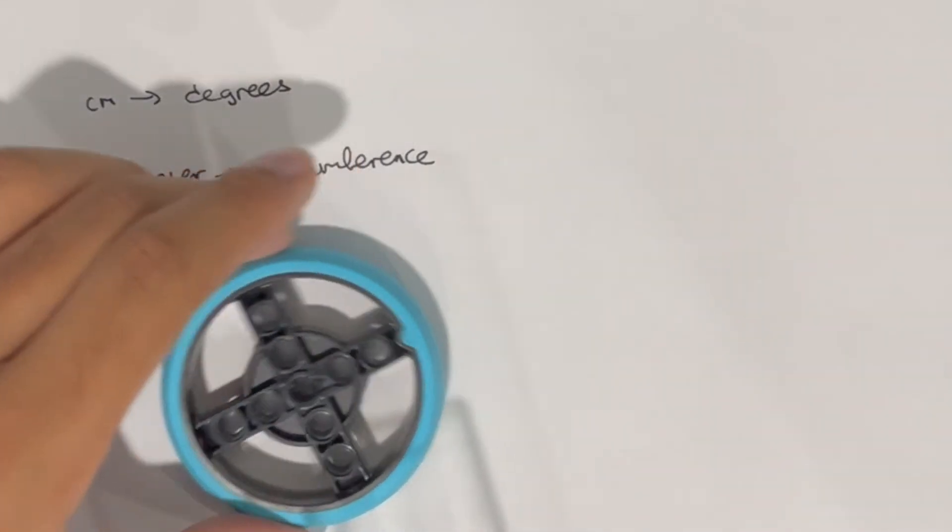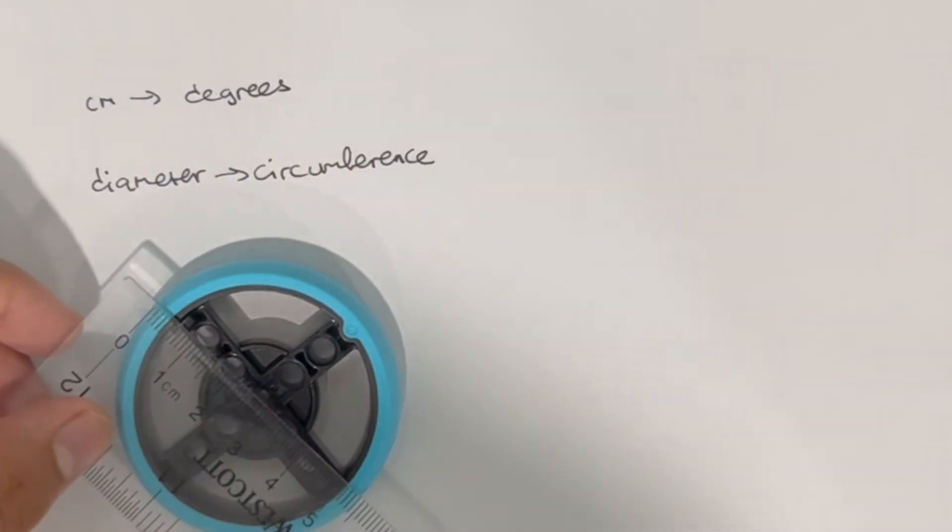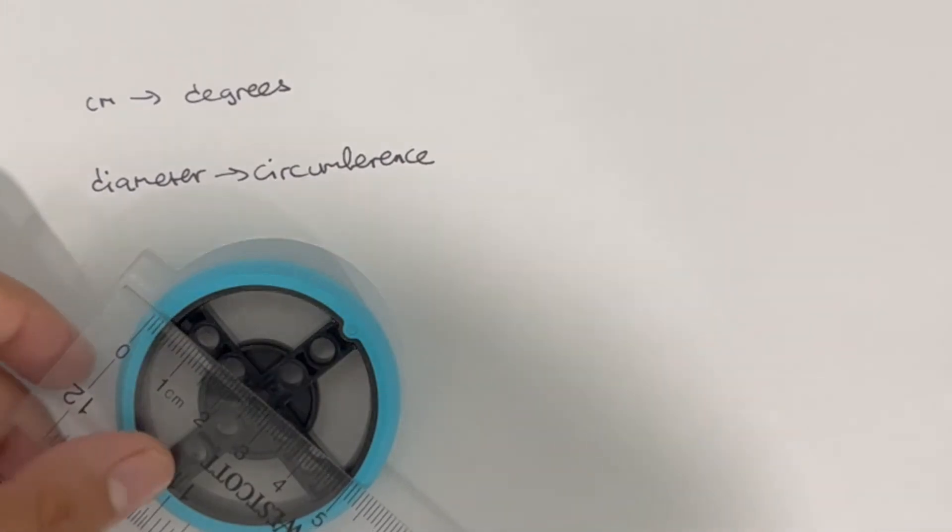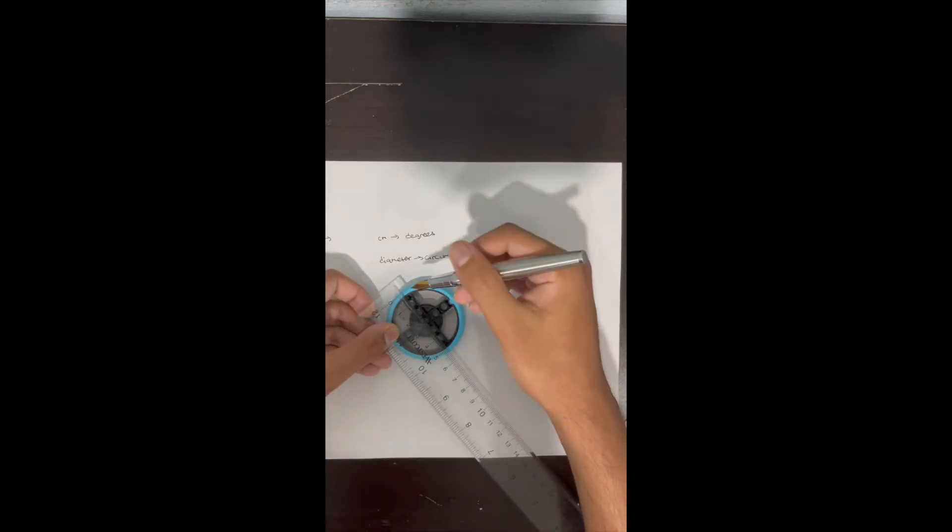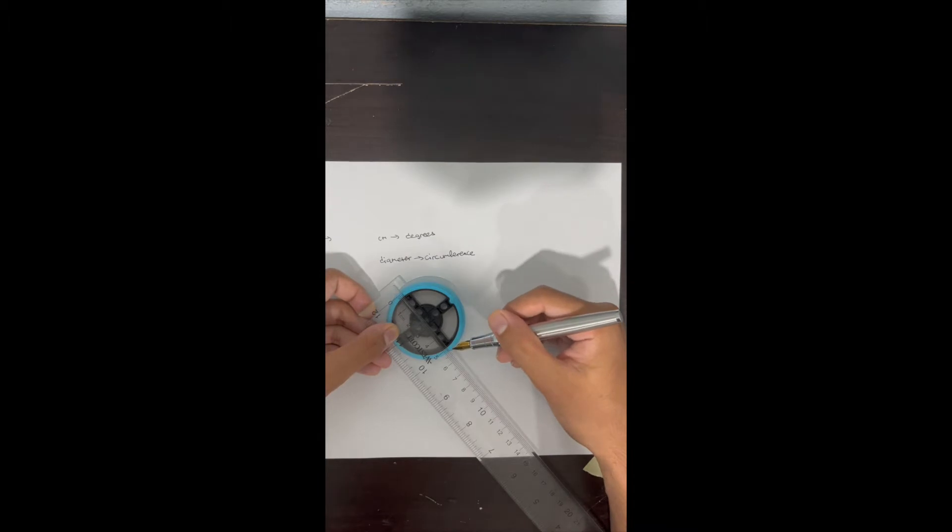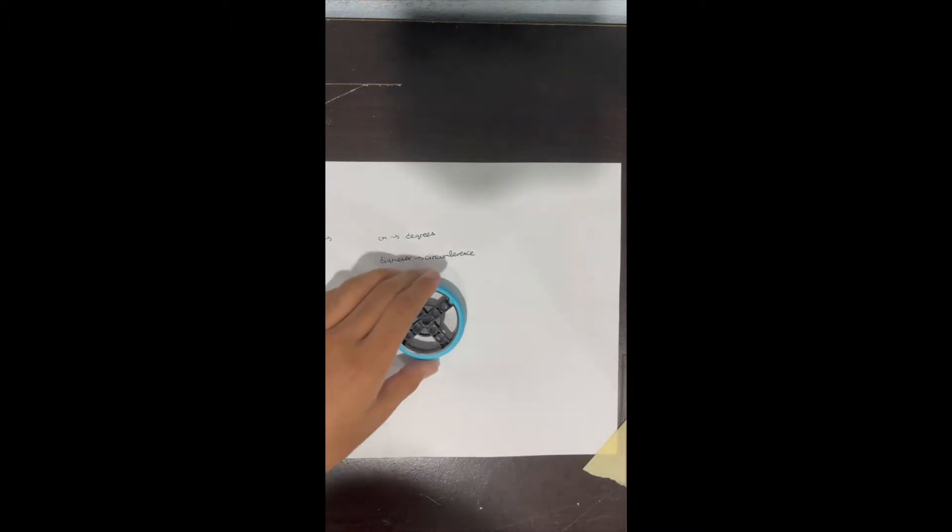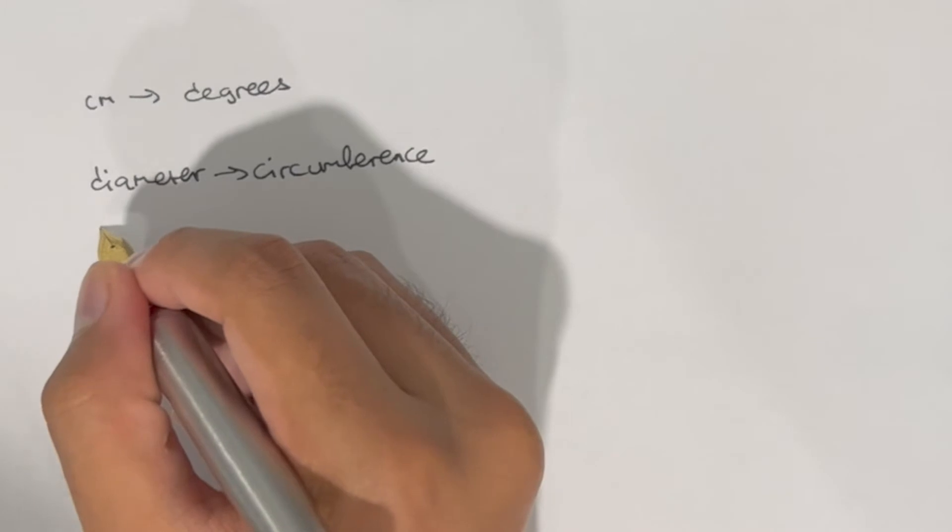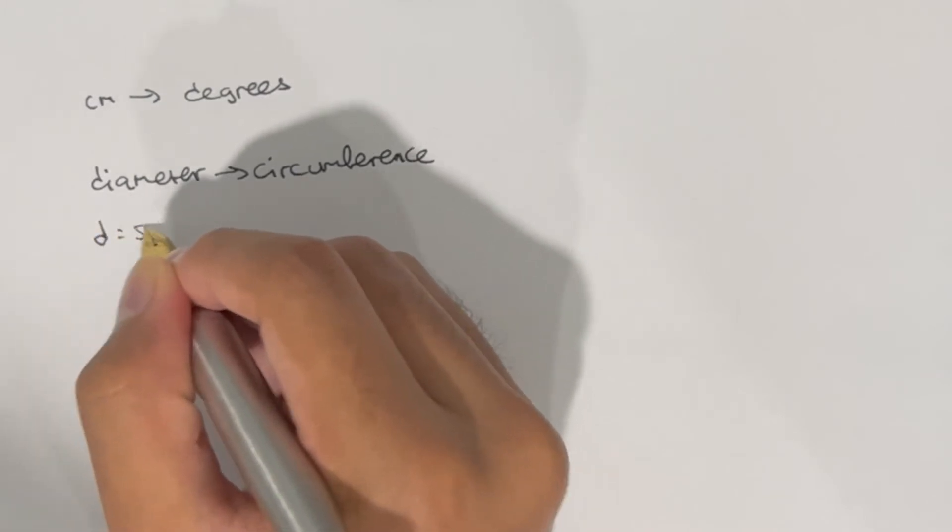So to find the circumference, I'm going to first find the diameter. To find the diameter, I'm just going to take my ruler and measure. From one end to the other end, you'll see that the value is 5.2 centimeters. So that's going to be my diameter, but that could change depending on what wheel you have and how used it is.